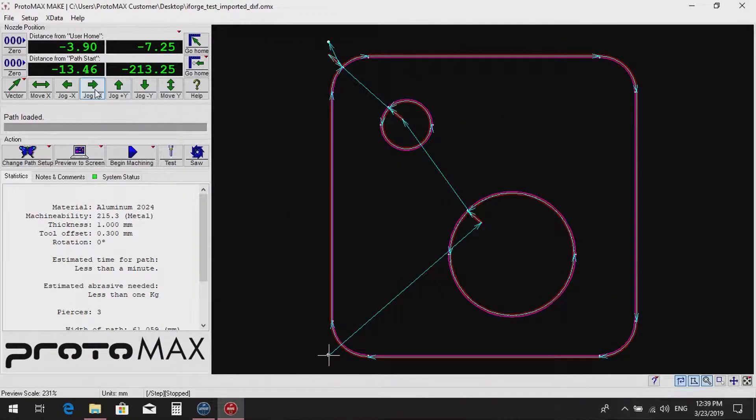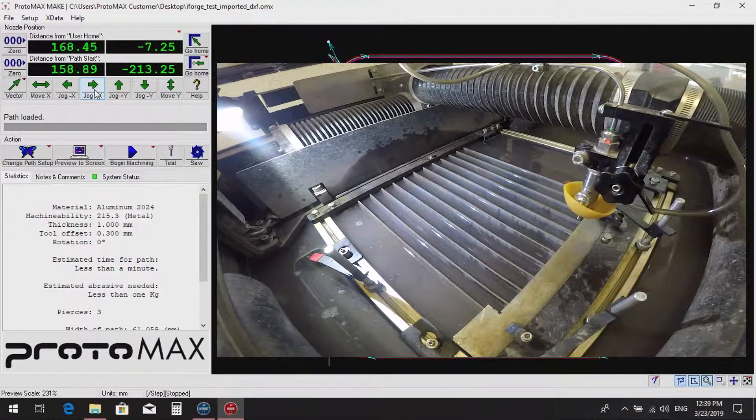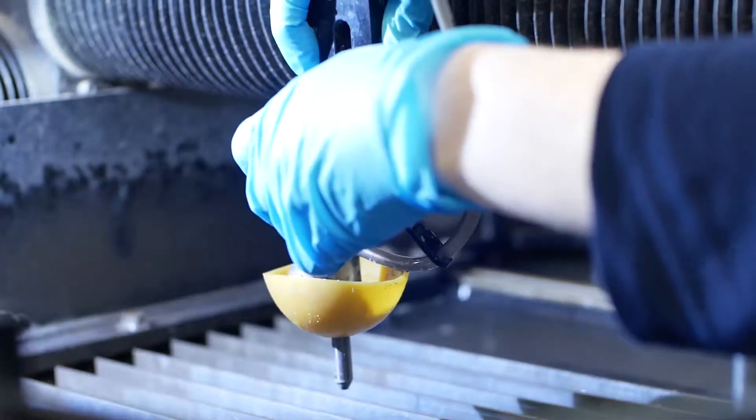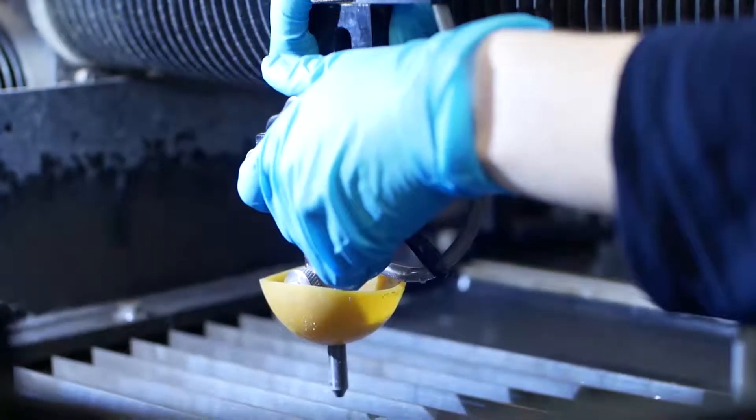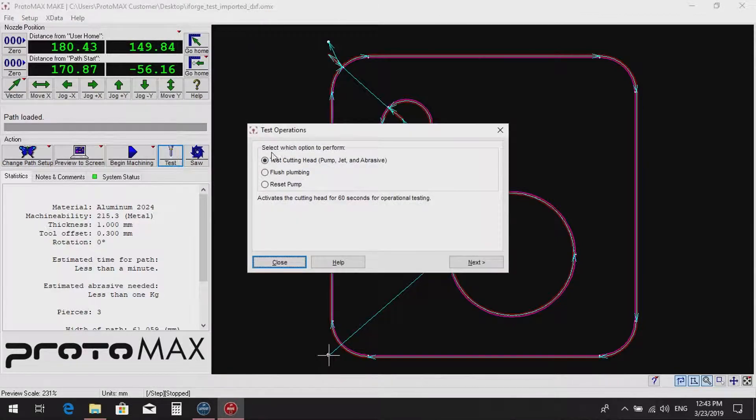Now the machine must be flushed. Move the nozzle to the centre of the bed in between two slats using the jog buttons. Lower nozzle to about 10mm above water level and lower the splash guard. Close the lid and select test. This runs for one minute and flushes the nozzle with water.